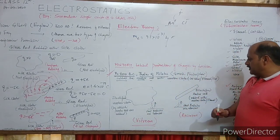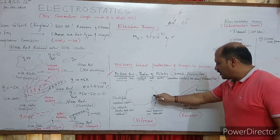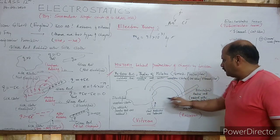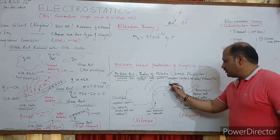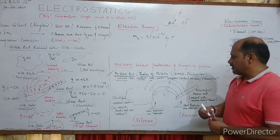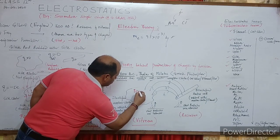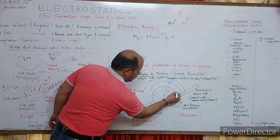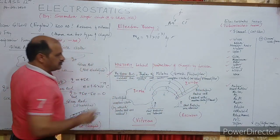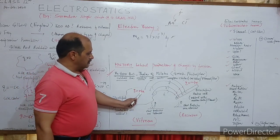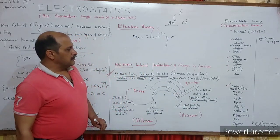Now let's come to the amber example. When amber rod is rubbed with woolen cloth, electrons get transferred from the woolen cloth to the amber. Say four electrons get transferred — then the woolen cloth becomes +4e because it has lost four electrons, and the amber becomes −4e because it has gained four electrons. Q is the symbol used for charge.